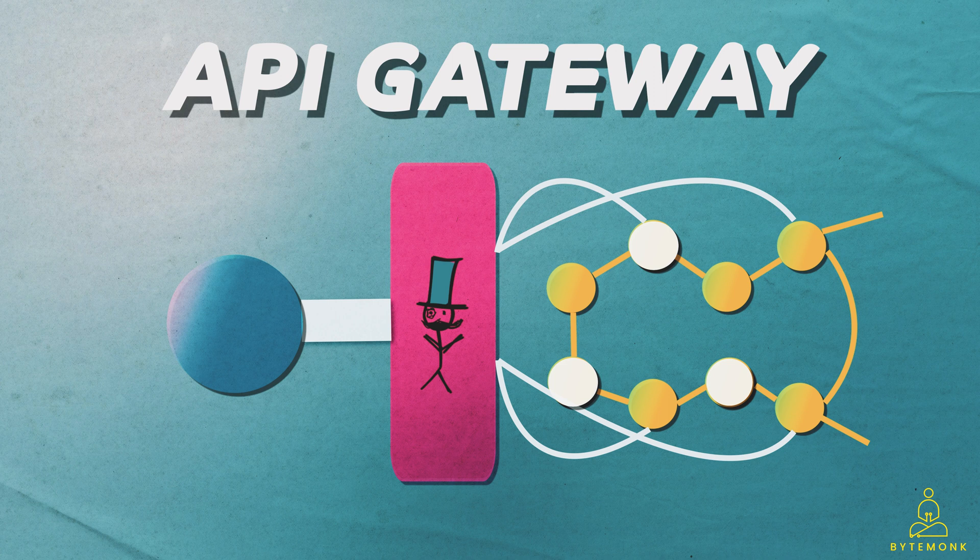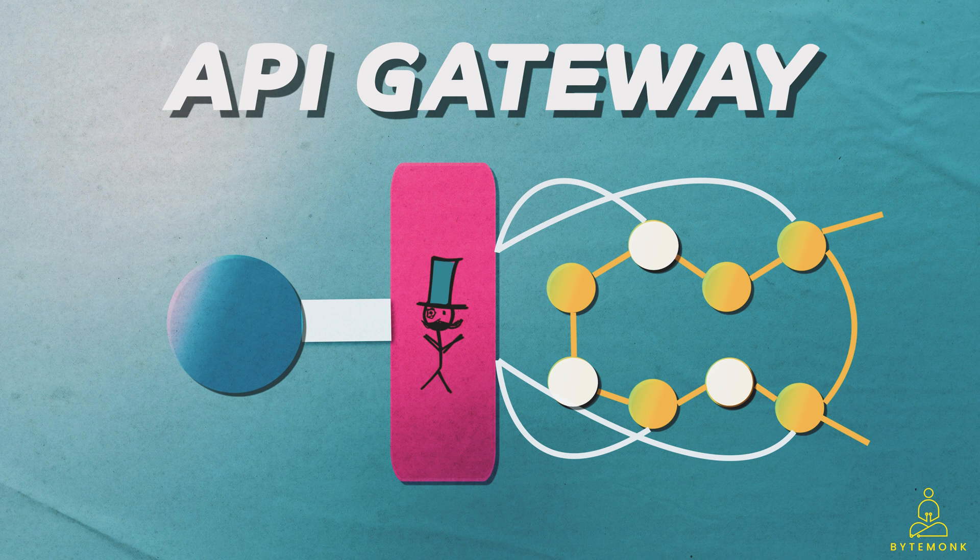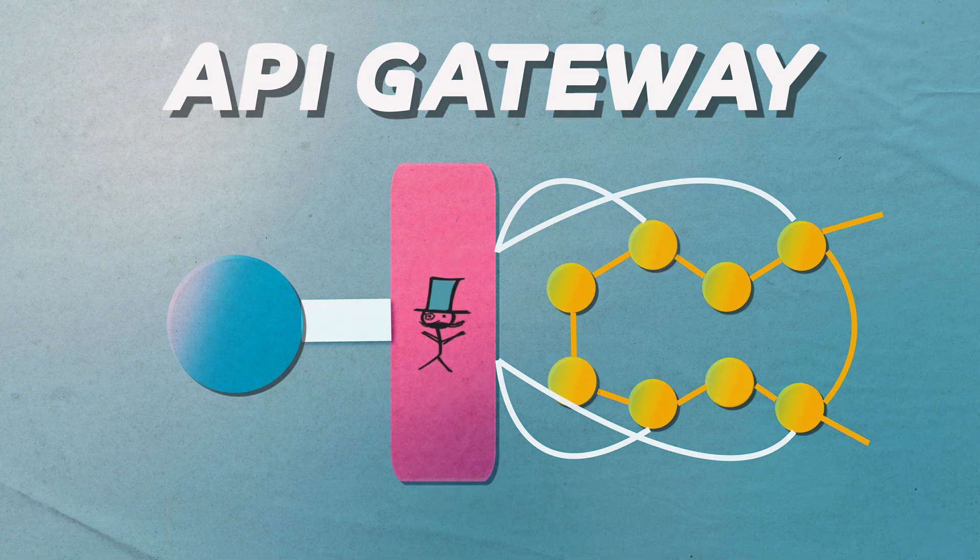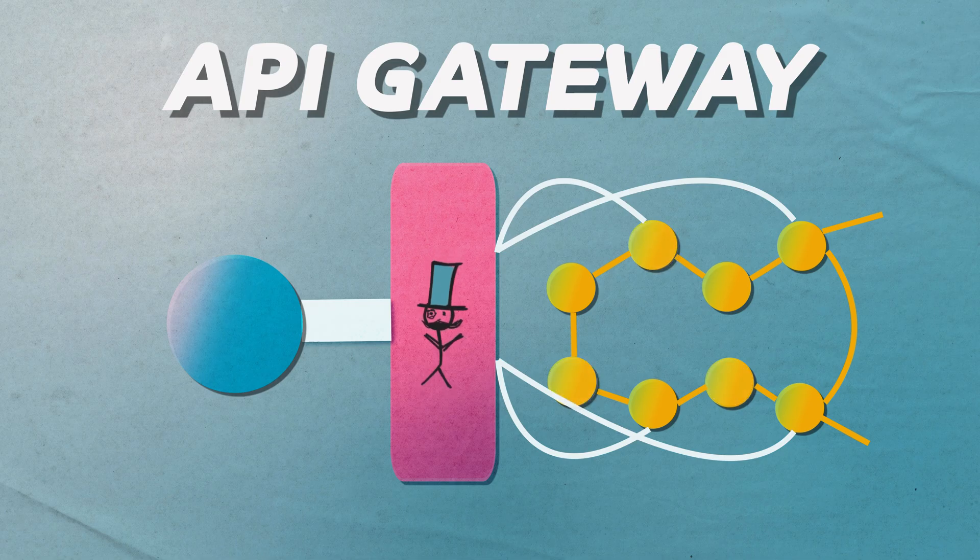It can also perform tasks such as authentication, rate limiting, load balancing and analytics. By using an API Gateway, you can abstract the complexity of the backend services and provide a simplified interface to the clients. This also allows you to easily add or remove backend services as the system evolves.